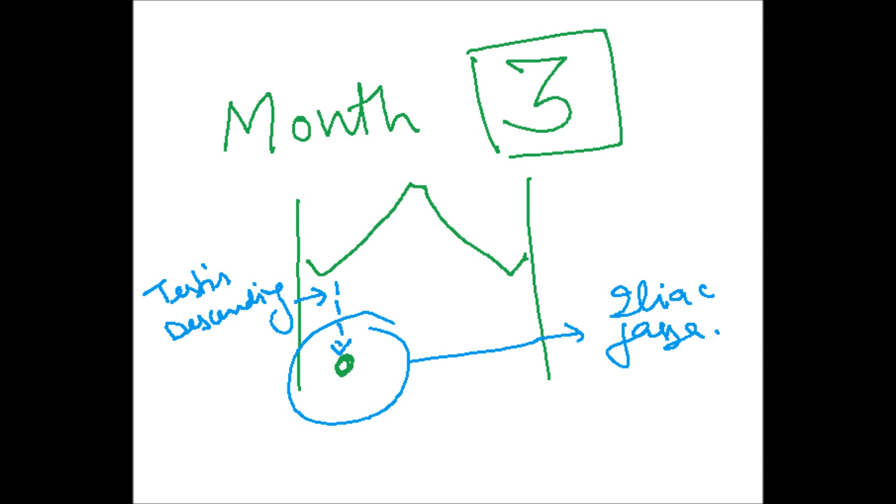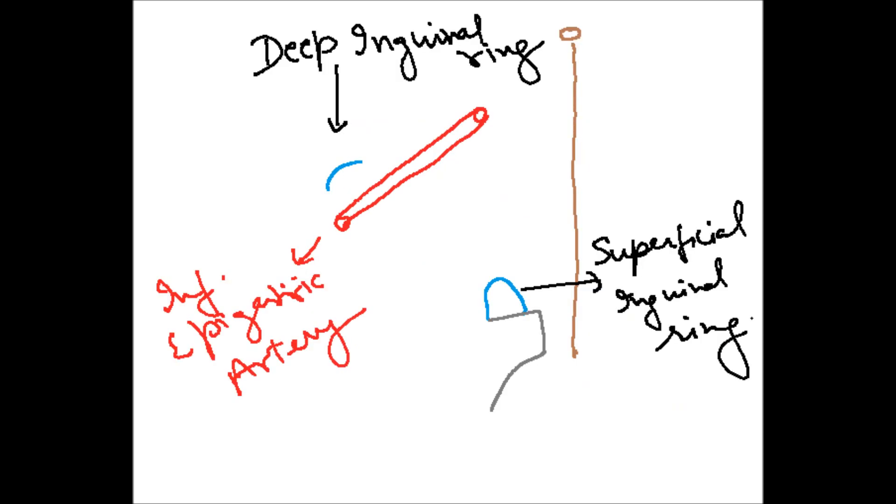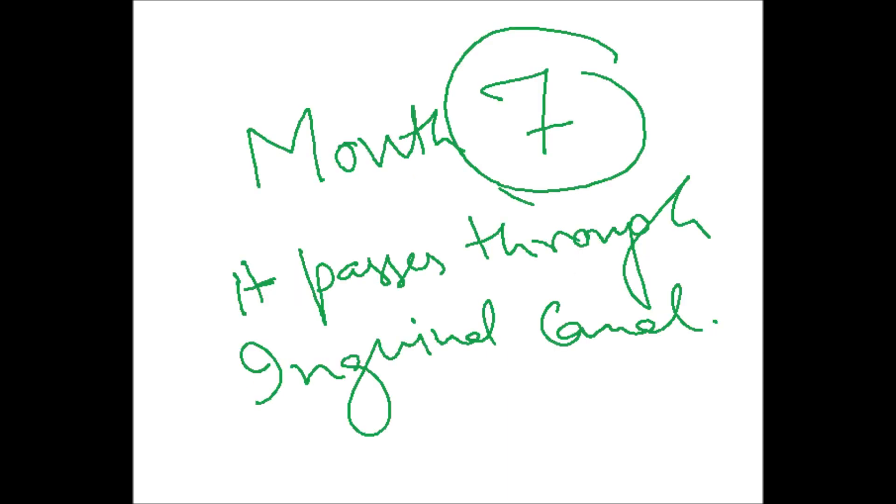In the second month it starts descending, and by the third month it reaches the iliac fossa. Now from fourth, fifth, and sixth month it rests at the deep inguinal ring.